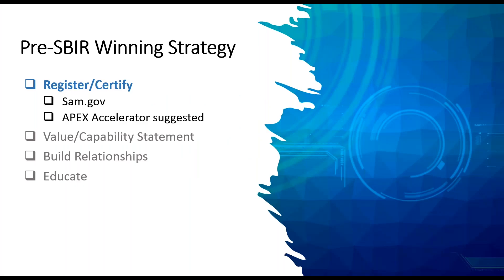Now we're going to talk about a free SBIR winning strategy. When I first started learning about SBIRs as a small business owner, I wanted to get one right away — that's not how it works. The first step is to register and certify your company. One of the most important places is SAM.gov, which is where you get a cage code. You have to have a cage code in order to apply for an SBIR.